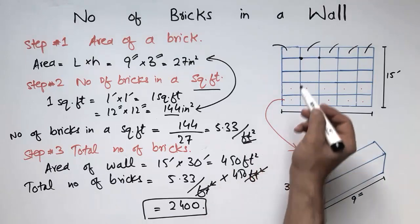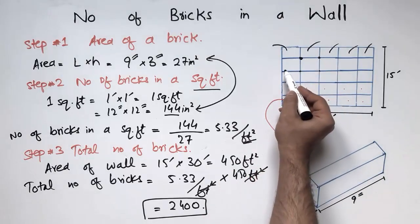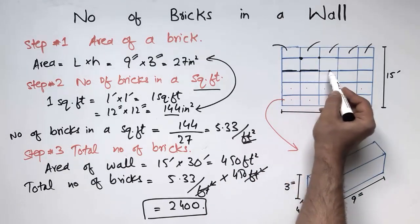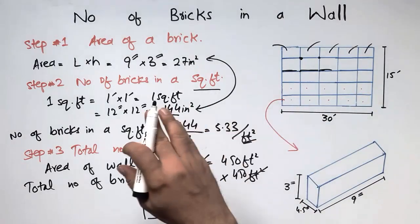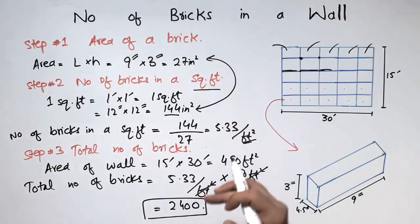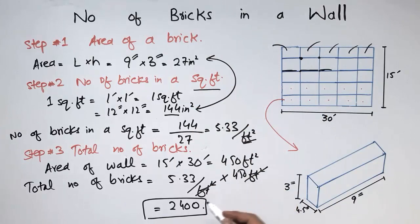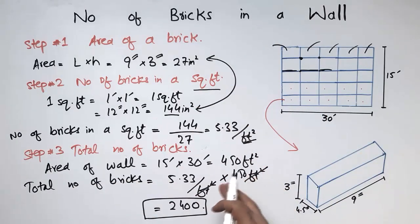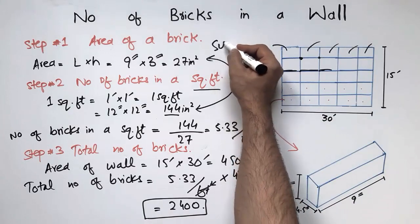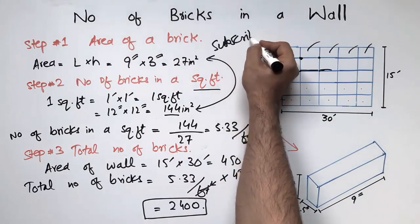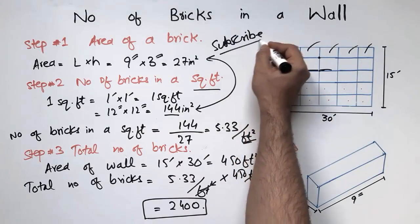Note that these 2400 bricks are calculated without considering the mortar area. Mortar is applied on top of each brick layer before placing the next layer, but in this calculation we have neglected the mortar area. I hope you understand how to find the number of bricks. Don't forget to subscribe for more engineering videos. Thank you for watching.